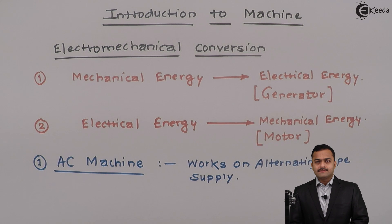Whereas, a machine which works on direct type supply is called a DC machine.